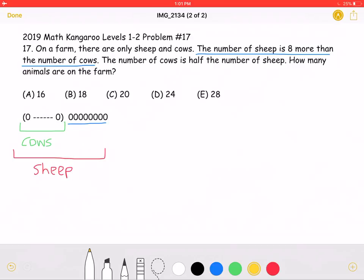The problem also states that the number of cows is half the number of sheep. So this line over here represents the total number of sheep. And the problem states that the number of cows is half of that number.